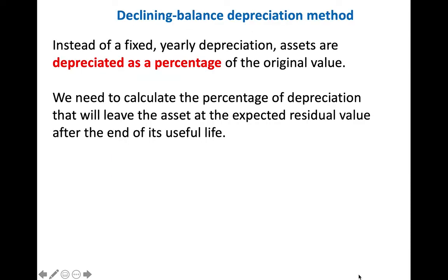The declining balance depreciation method works differently. Rather than depreciating the asset by the same amount every year, it recognises that some assets lose more value at the beginning of their life than at the end — a common case being vehicles. Therefore, instead of a fixed yearly depreciation amount, we calculate a fixed percentage depreciation, as the same percentage will remove more value at the beginning than at the end of the asset's life.